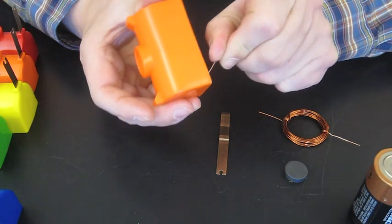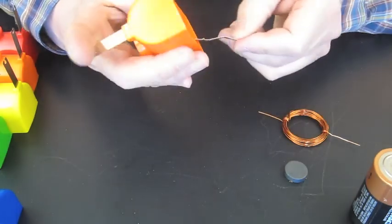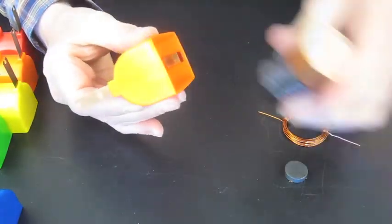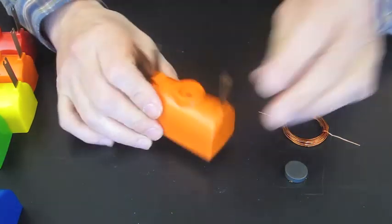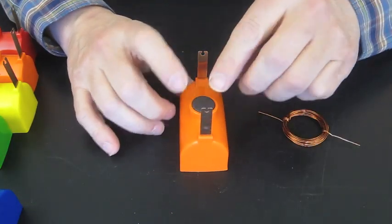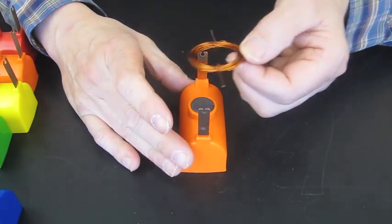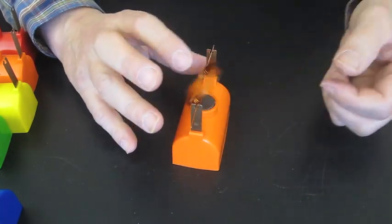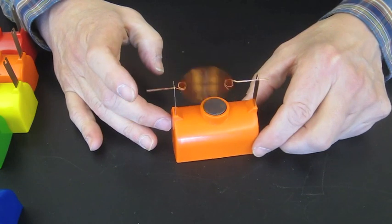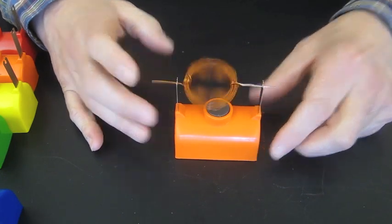To assemble it, the supports go through the bottom. The battery snaps into place. The magnets fitting on top of there and it's held there because it's magnetic and it sticks to the battery. And then simply put the coil on, give it a push, and off it goes.